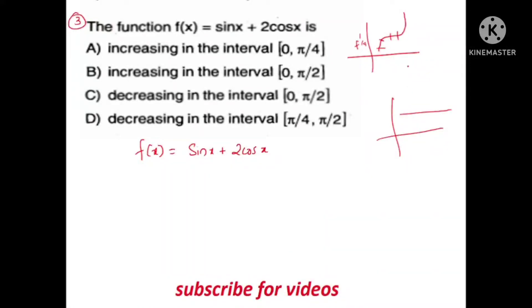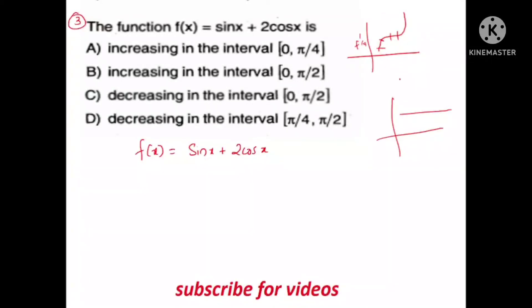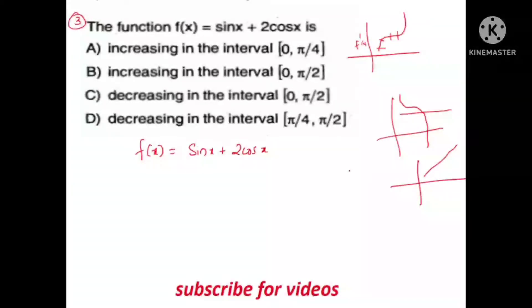What you have to do is find where the function is increasing or decreasing. If f'(x) is positive the function increases; if f'(x) is negative the function decreases. If you notice the decreasing function, you will see the point. For strictly increasing, all points must be not equal.